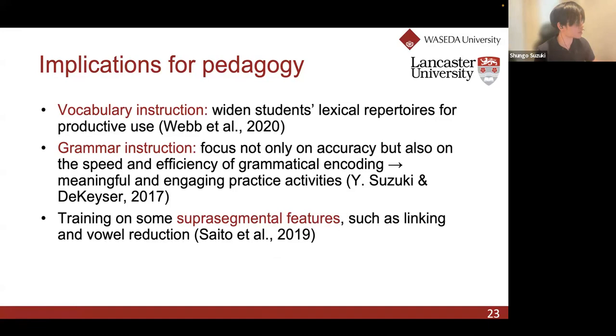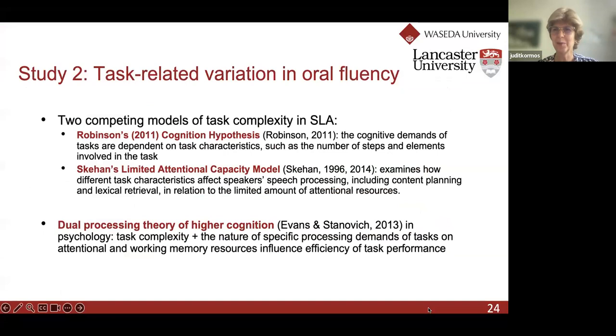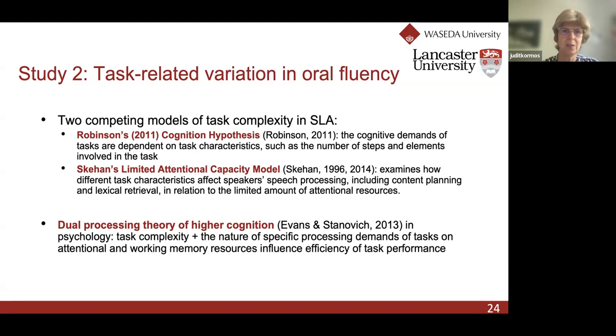Now Yudit will introduce Study 2, which examined task effects on fluency performance using the fine-grained set of fluency measures. All right — thank you, Shungo, for the detailed and insightful discussion of Study 1. As I said at the beginning, we were also interested in how oral fluency varies across tasks. This question has been quite extensively studied, mostly from the CAF — complexity, accuracy, fluency — framework. Anyone familiar with the complexity-accuracy framework would know there are two competing models: the cognition hypothesis and the limited attentional capacity model.